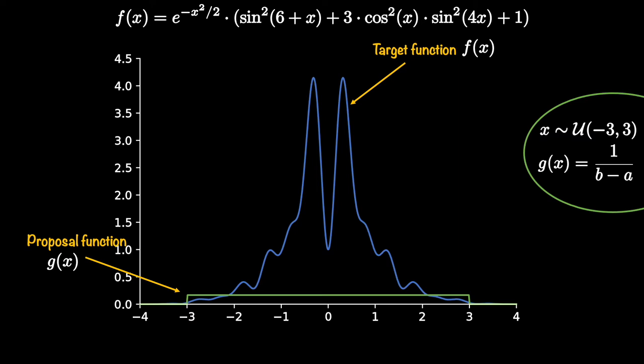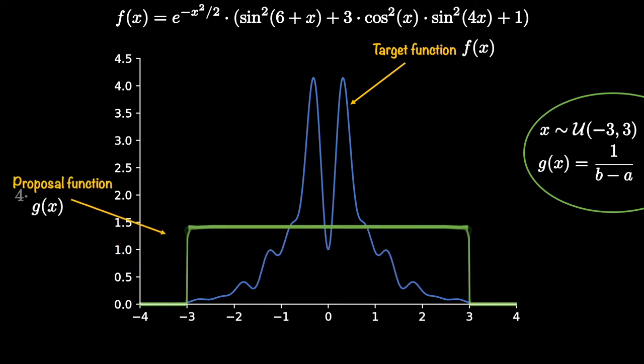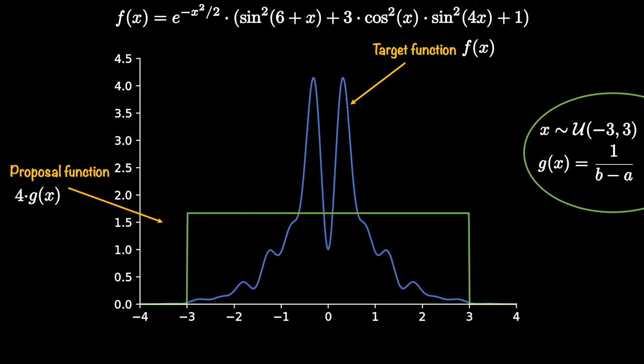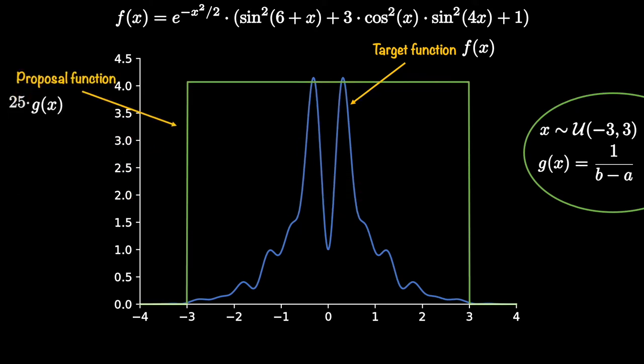For that we need a scaling constant. Here is the first attempt. All I did was to scale the proposed function by four and we have a better encapsulation but still not satisfactory. And if we scale it with 25, then we have a full coverage. Note that this 25 applies to this problem only and is not valid for other target and proposal function combinations.